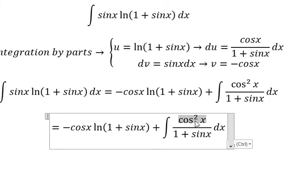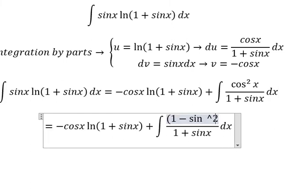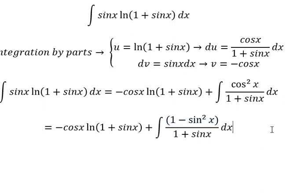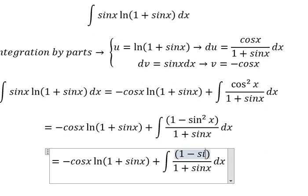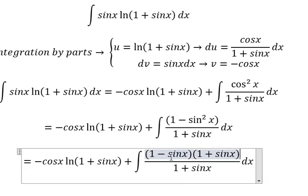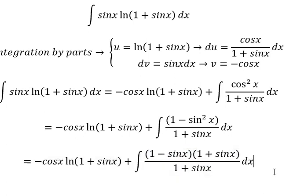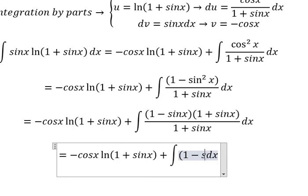We know that cosine squared x can be changed into one minus sine squared x. One minus sine squared x equals one minus sine x multiplied by one plus sine x. When one plus sine x simplifies with one plus sine x, we get one minus sine x.